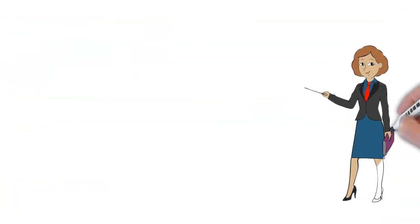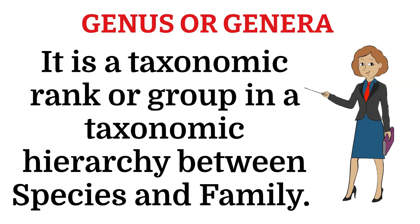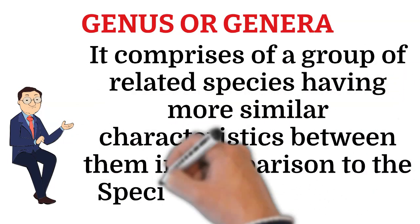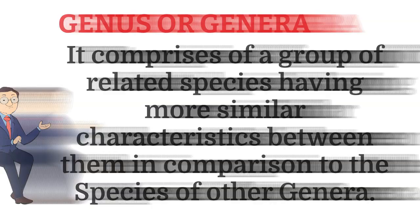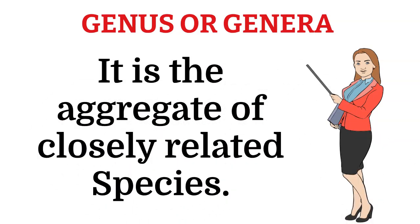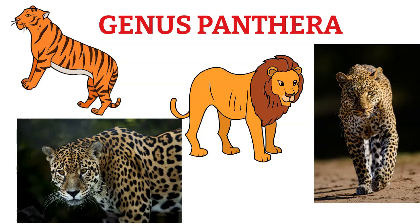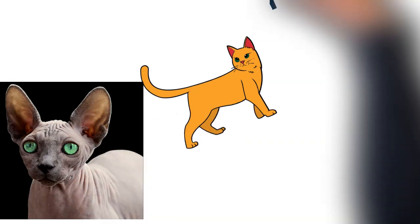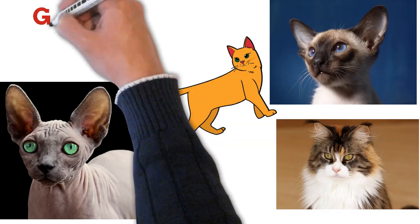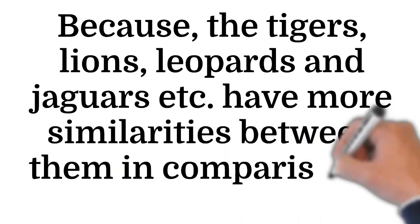The next higher taxon is genus or genera. Genus is a taxonomic rank in a taxonomic hierarchy between species and family. It comprises a group of related species having more similar characteristics and genetics between them compared to species of other genera. Thus genus is the aggregate of closely related species. For example, the genus Panthera includes tigers, lions, leopards, and jaguars, which are closely related. Cats, though similar to tigers, do not come under genus Panthera; instead they are grouped under genus Felis, because tigers, lions, leopards, and jaguars have more similarities between them compared to cats.